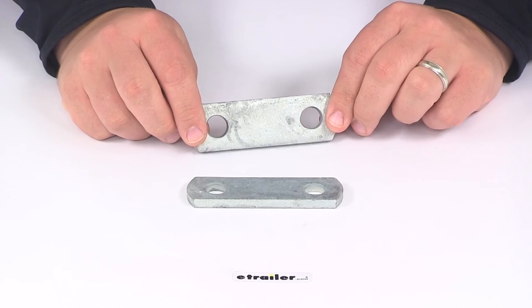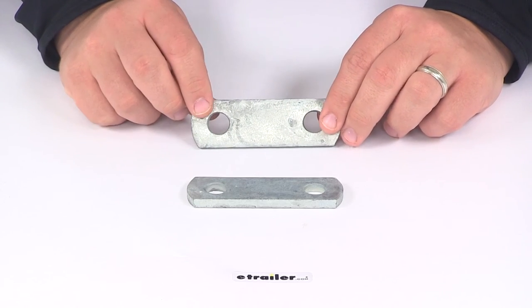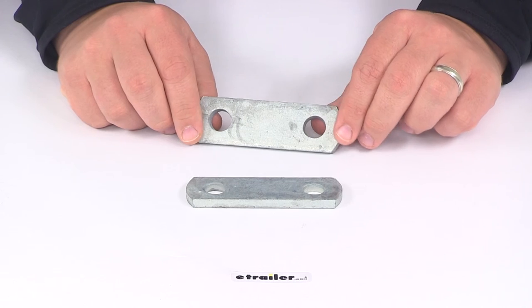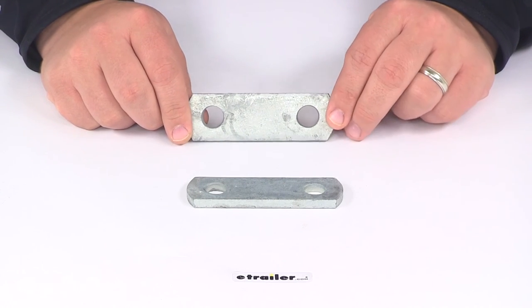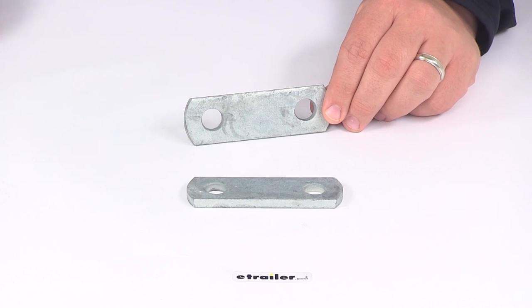These are designed to accept U-bolts with an inner width measurement of two and one-eighth inches. Those are sold separately, and if you need some, you can find them at eTrailer.com. That does it for today's look at the CE Smith frame straps.